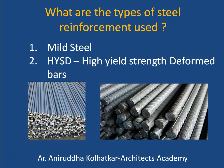There are basically two types of reinforcement bars. One is called mild steel bars and the second are called high yield strength deformed bars, or HYSD bars. The mild steel has got a smooth surface and it has also got lesser strength than the HYSD bars.